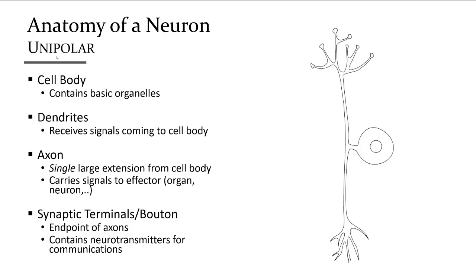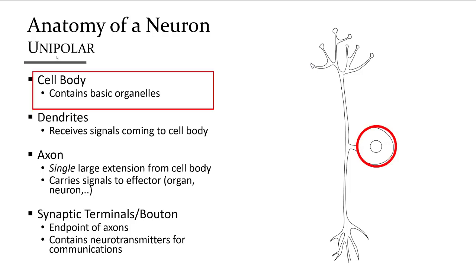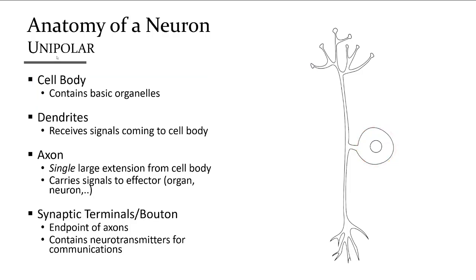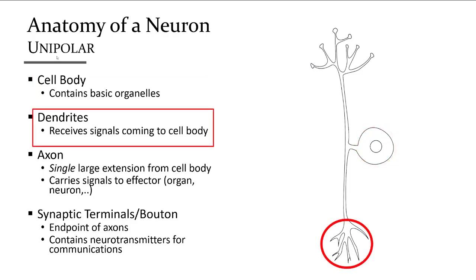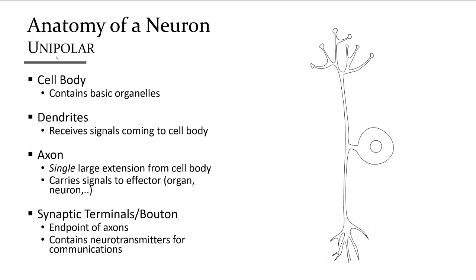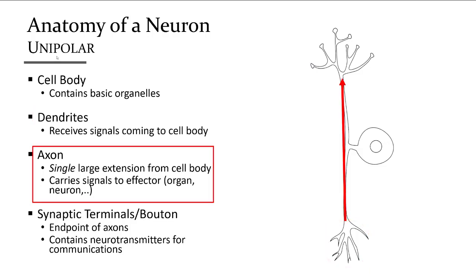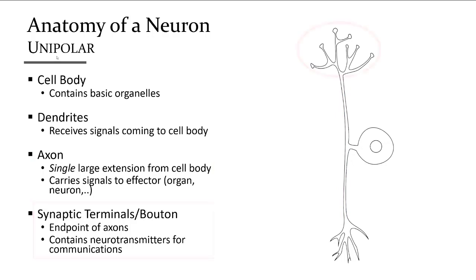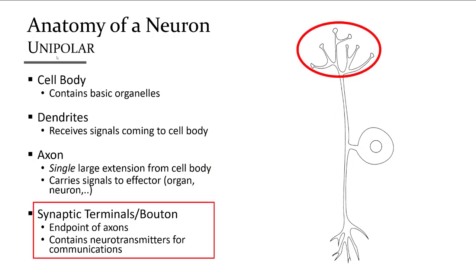The unipolar sensory neuron is a little different — the cell body is off to the side along the axon. Dendrites are where various receptors are located to elicit excitation of the axon. The axon sends its electrical impulse away from the dendrites and towards the synaptic terminals, which release their neurotransmitter to another neuron as a signal from the detected sense makes its way to the brain for awareness and understanding.